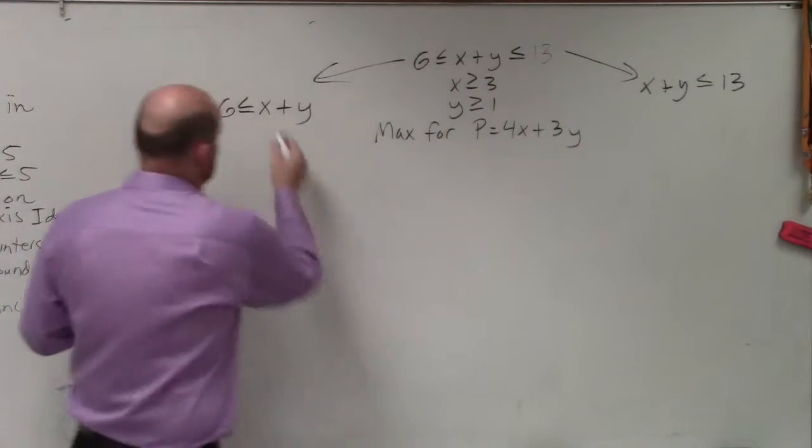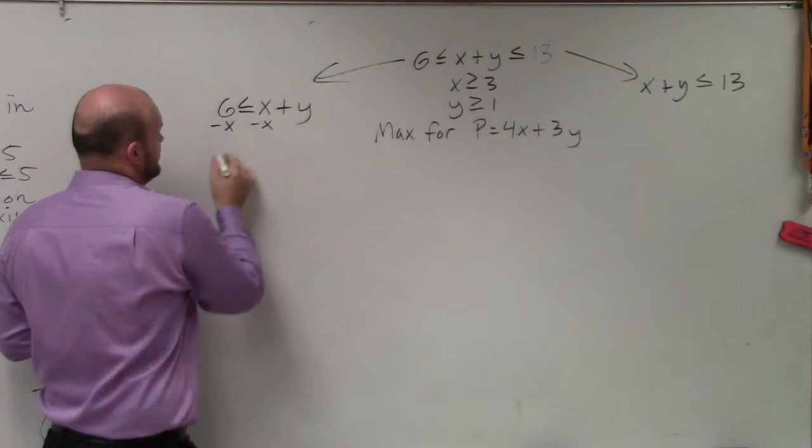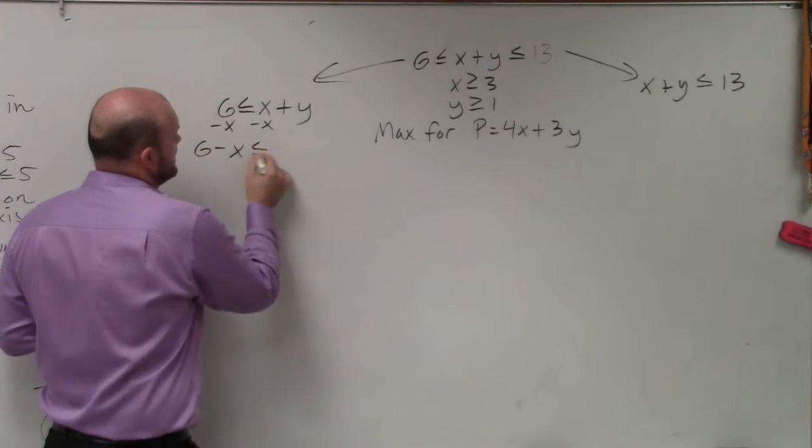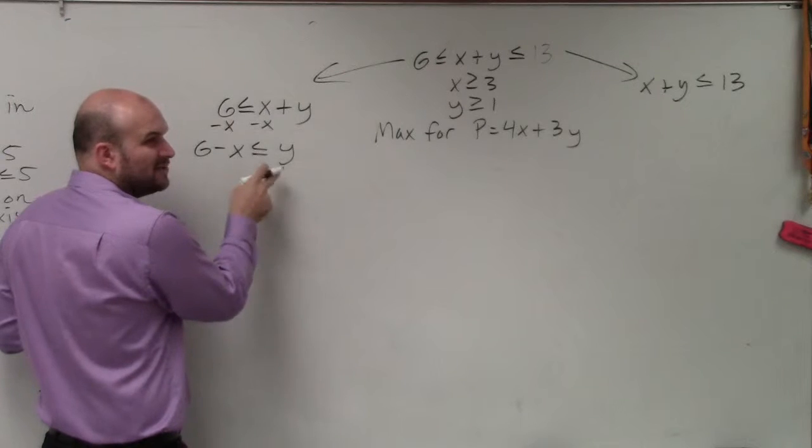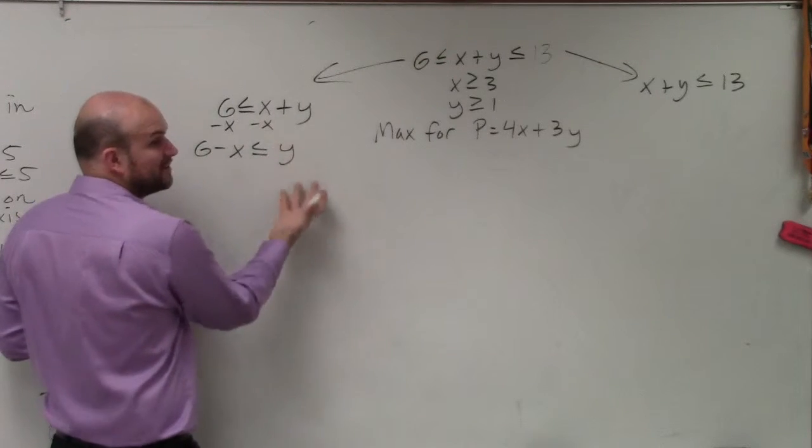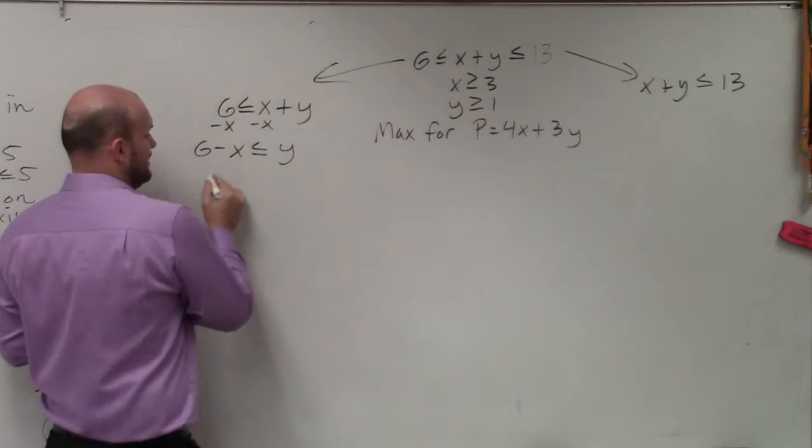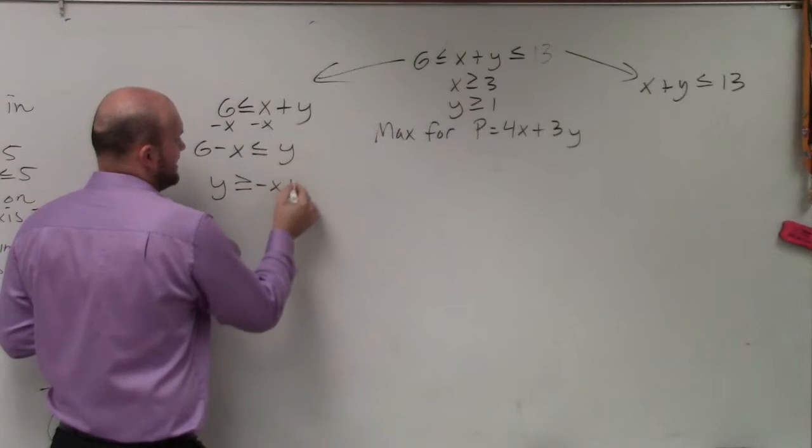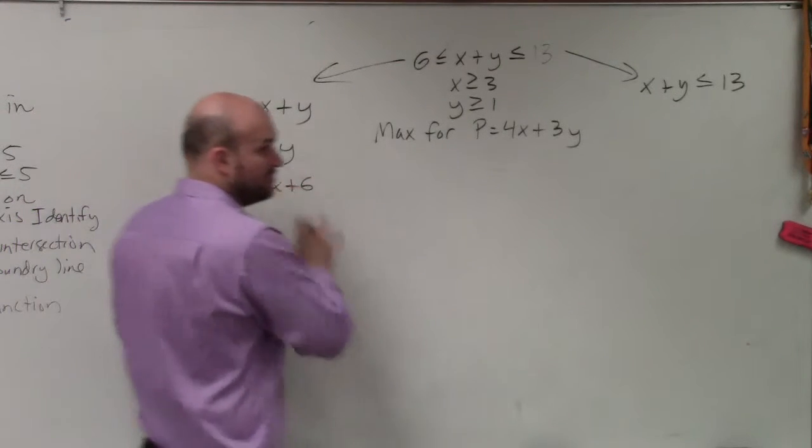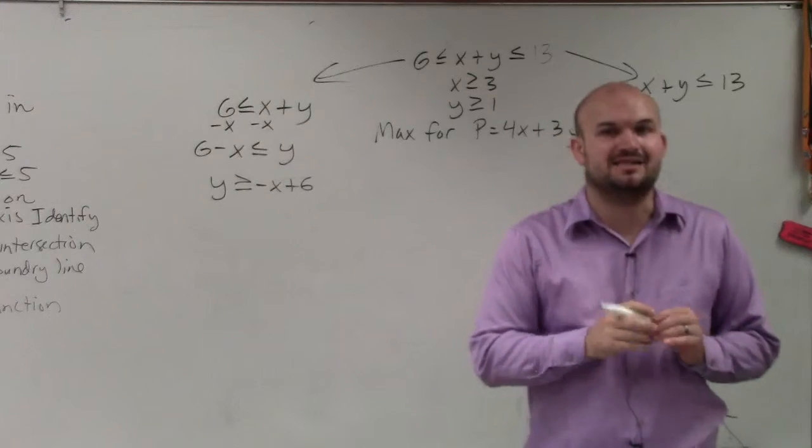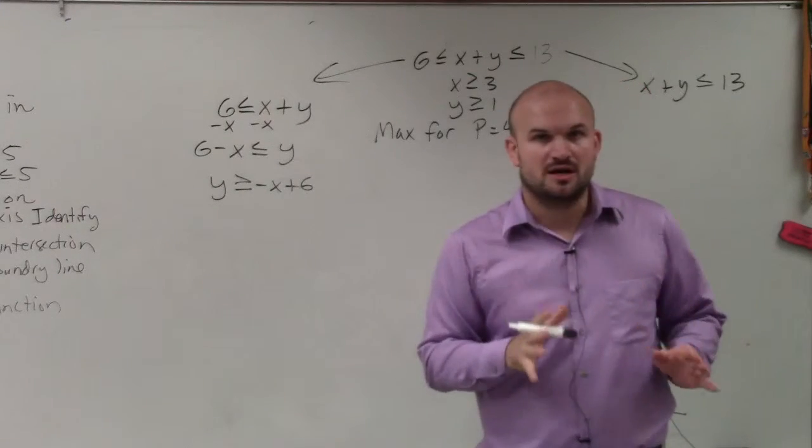Then I'm going to solve them for y. So here, I need to subtract x on both sides. I have 6 minus x is less than or equal to y. I don't like graphing when y is on the right-hand side, so I'm going to flip everything and write this as y is greater than or equal to negative x plus 6. Please confirm with me that the equations are exactly the same. They're just reflections of one another.